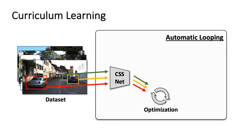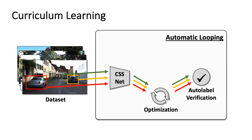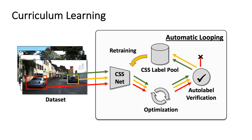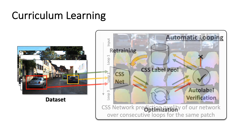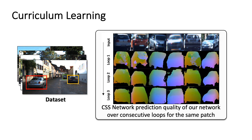To improve the quality of the CSS network predictions, we employ a curriculum procedure. Namely, we add a verification step to discard incorrect auto-labels before saving them into our CSS label pool. Once all frames are processed, we retrain our CSS network and begin the next loop over the dataset. As a result, we eliminate the domain-gap problem and the CSS network predictions become more accurate.